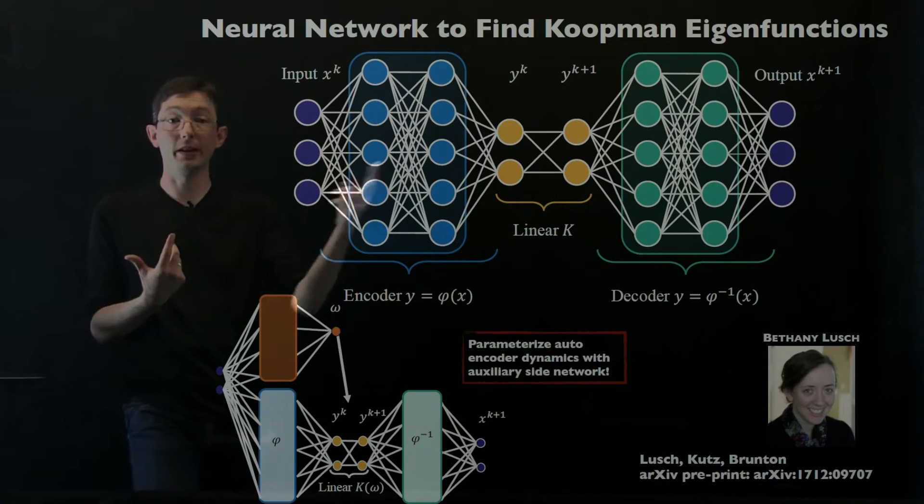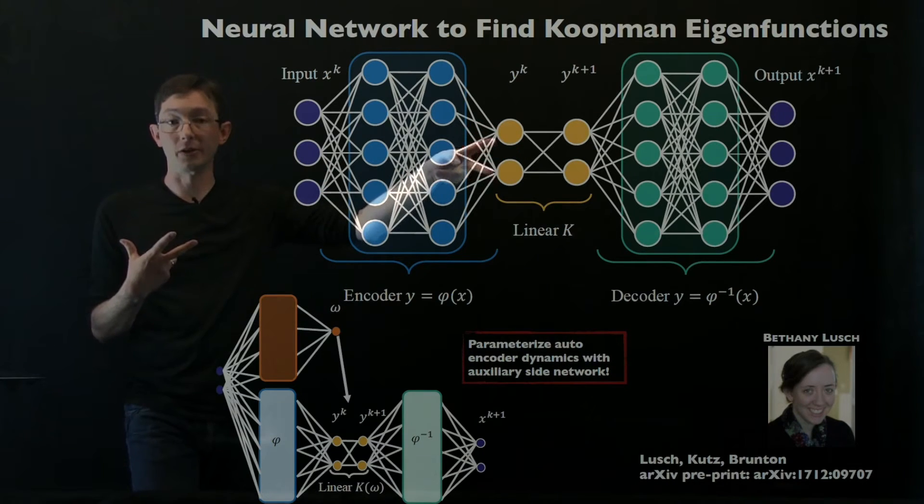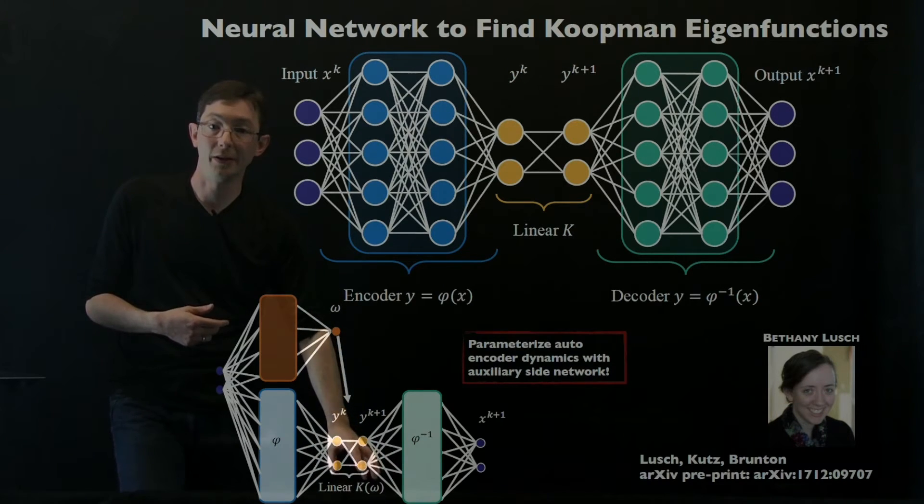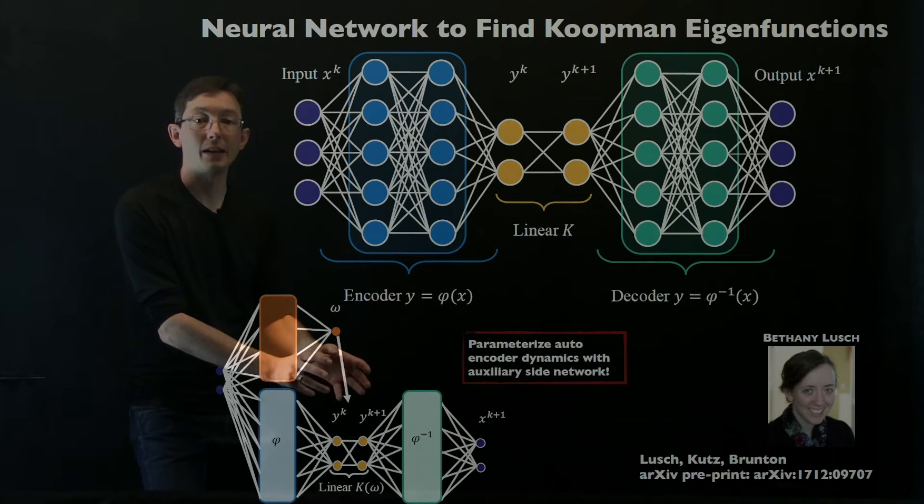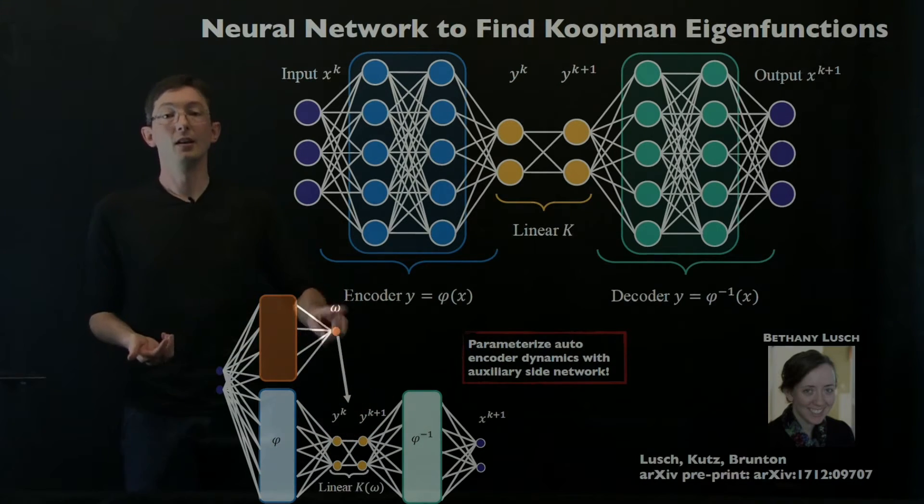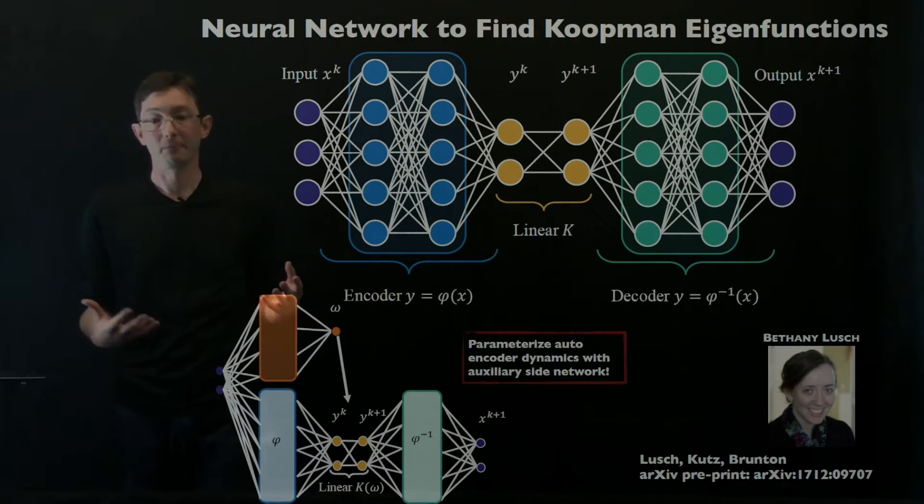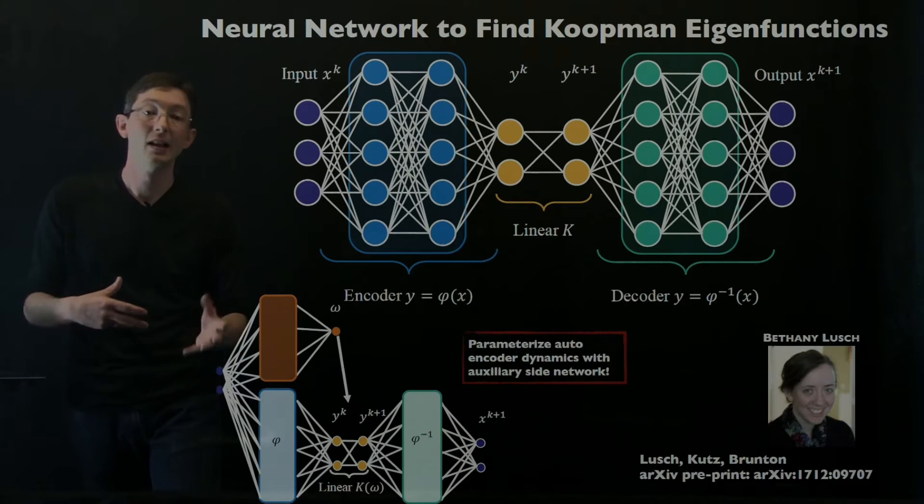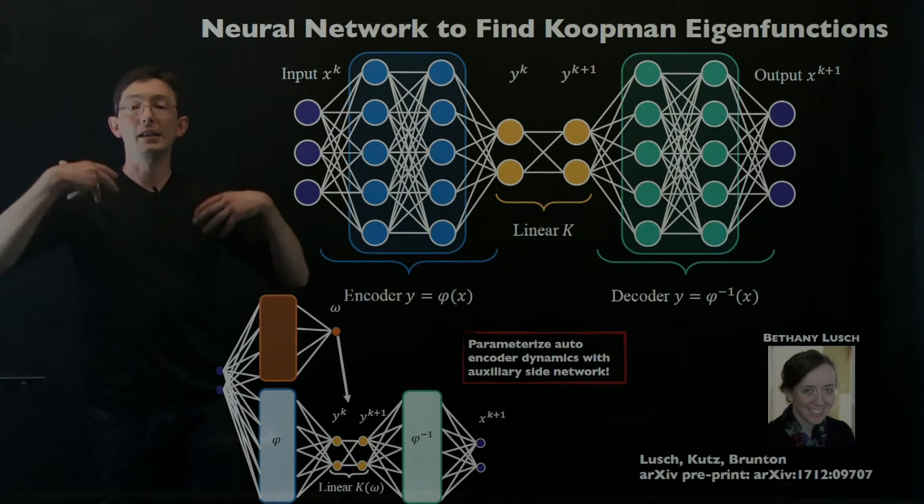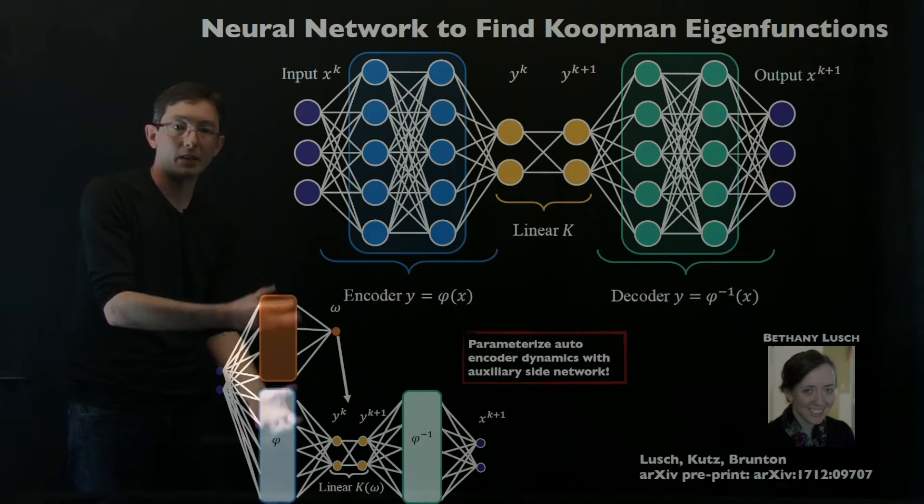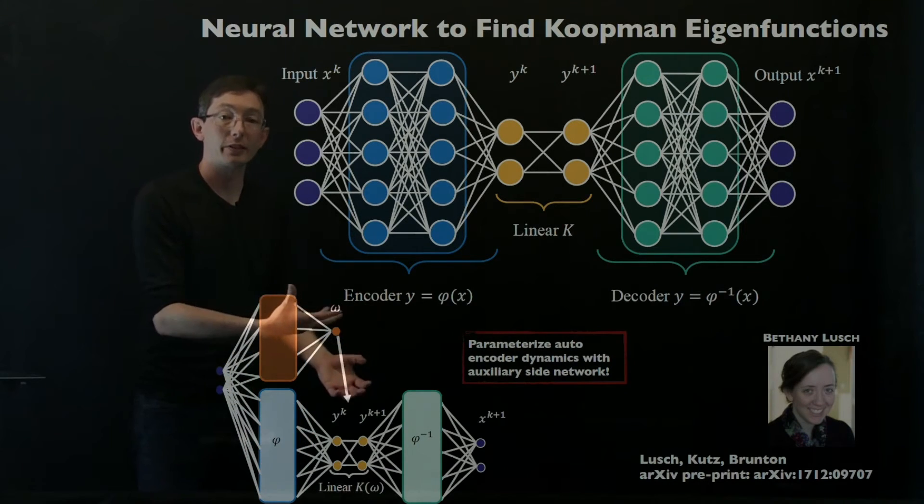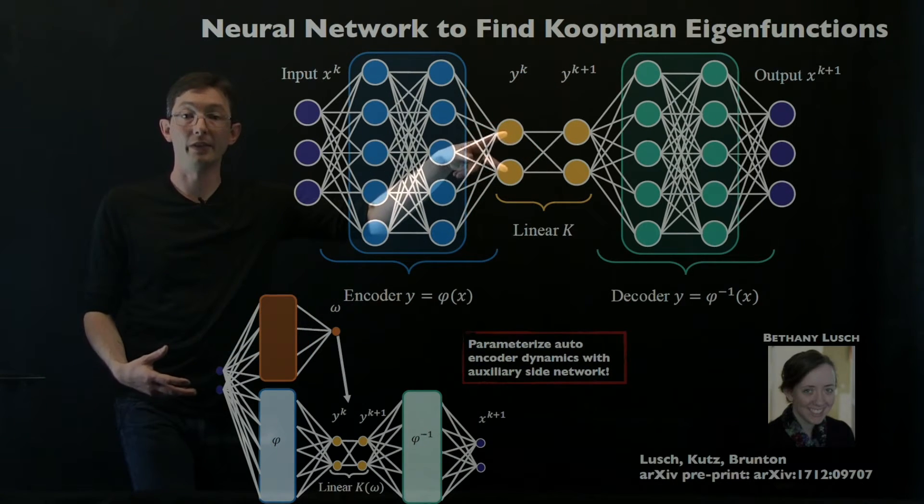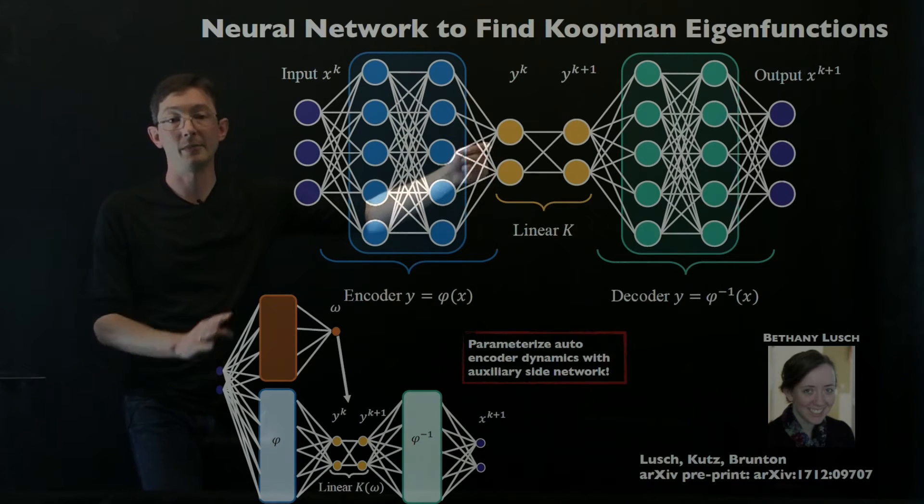We hard code that we still want two variables, two eigenfunctions. We want them to be complex conjugates, so we build that structure into this K matrix. But Bethany has this auxiliary side network which essentially parametrizes those eigenvalues with this parameter omega. It's learning the continuous spectrum dependence on the state x and it's learning this eigenfunction structure. This extra constraint and structure in the system allows us to learn these much more parsimonious representations with these minimal variables in the middle that are now parametrized by our auxiliary network.